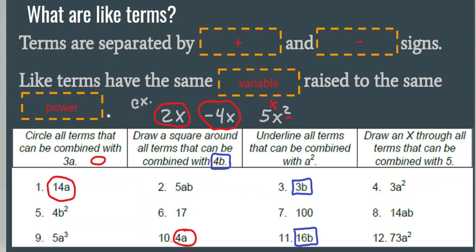Now underline all the terms that can be combined with a squared. I found 2 I can combine with a squared — 3a squared and 73a squared. They have the same variable raised to the same power. I cannot combine it with 5a to the 3rd power because that exponent is 3, whereas a squared has an exponent of 2. So I could not combine with that 5a to the 3rd power. It has to have the same variable raised to the same power.